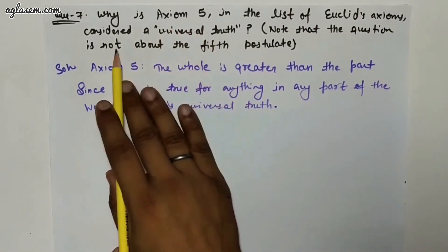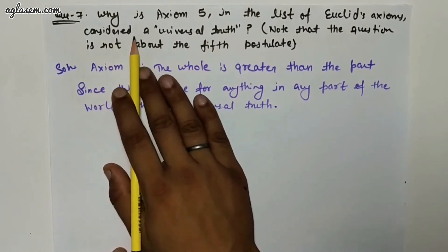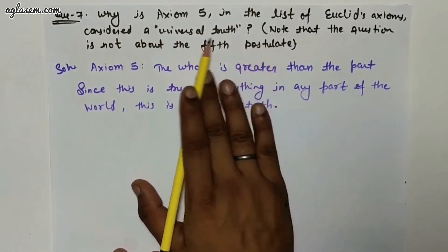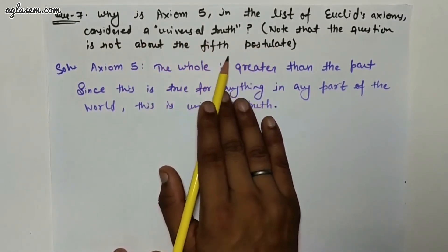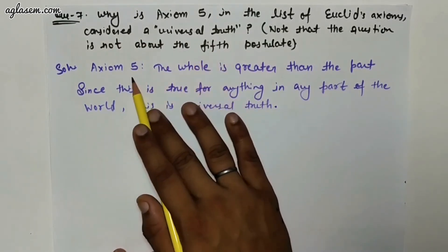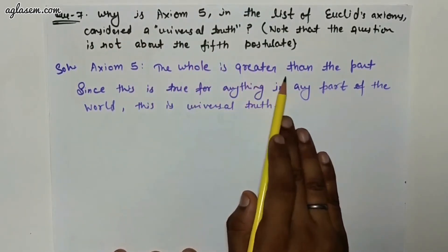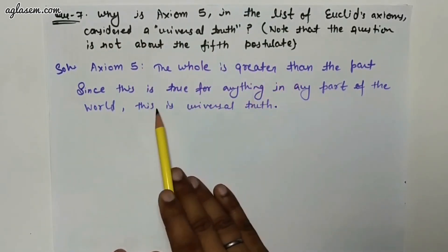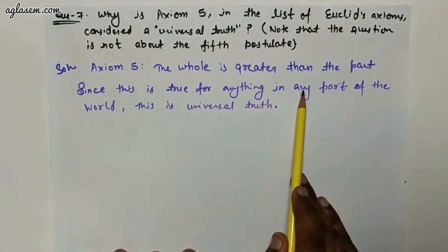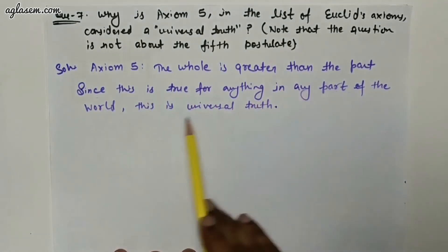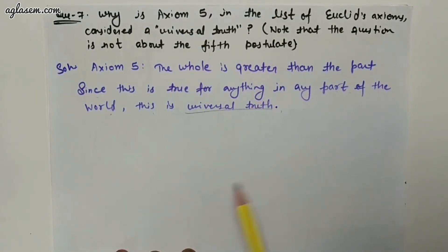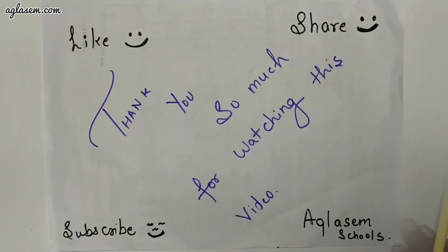Question number seven: why is Axiom 5 in the list of Euclid's axioms considered a universal truth? Note that the question is not about the fifth postulate. Axiom 5 states: the whole is greater than the part. Since this is true for anything in any part of the world, it is a universal truth.